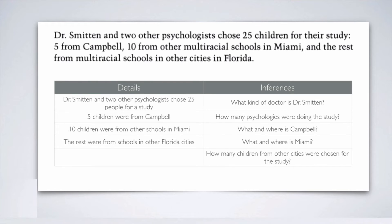What kind of doctor is Dr. Smitten? This is not written in the text — we don't see the information that Dr. Smitten is a specific kind of doctor. But it's easy to guess. He's a psychologist, because the text says Dr. Smitten and two other psychologists were doing something. Since Dr. Smitten was working with two other psychologists, we infer that Dr. Smitten was also a psychologist. We guessed it from how the sentence is written, so Dr. Smitten being a psychologist is an inference.